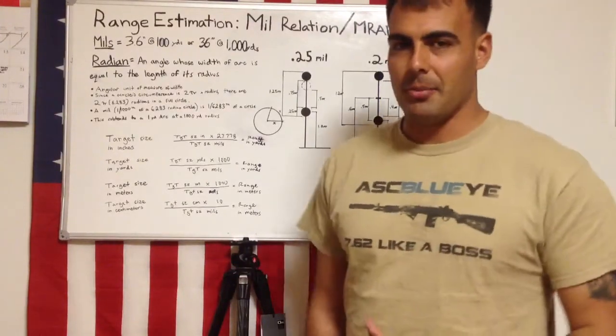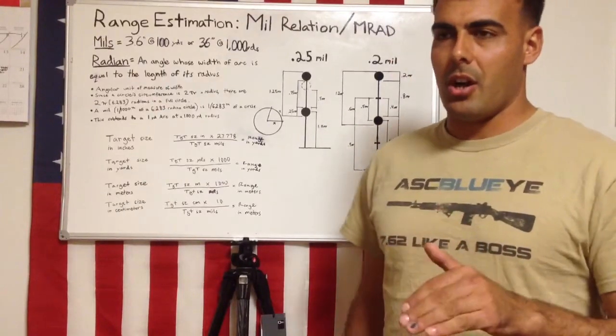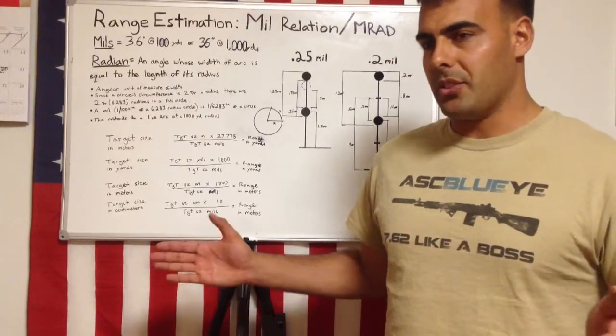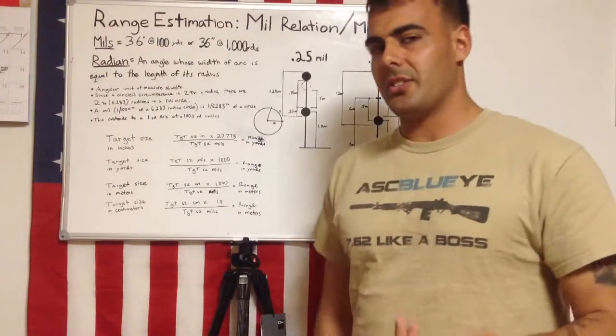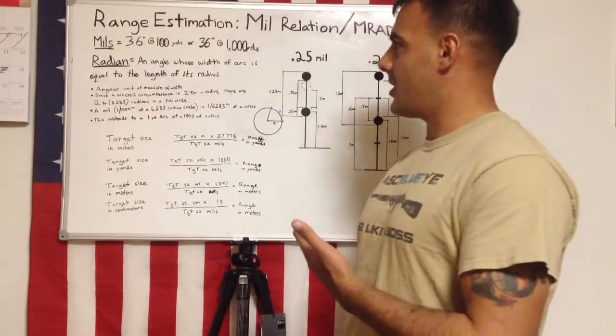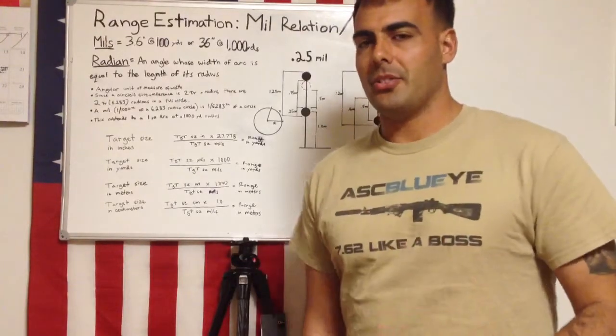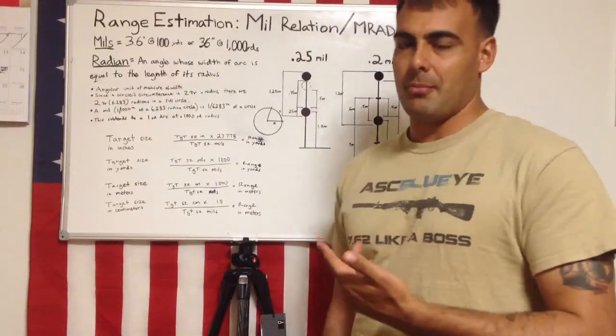What this subtends to is a 1 yard arc at a 1,000 yard radius, or also 3.6 inches at 100 yards, 36 inches or 1 yard at 1,000 yards. With mills, this also equals 1 meter at 1,000 meters.